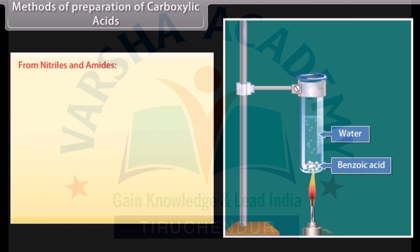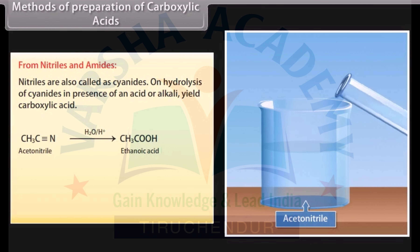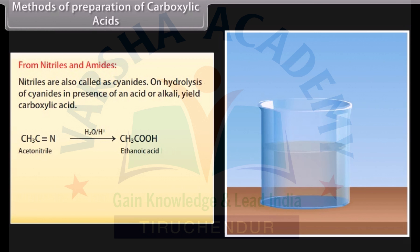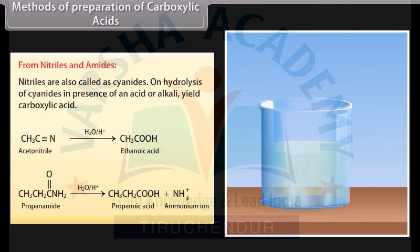From nitriles and amides: nitriles are also called cyanides. On hydrolysis of cyanides in the presence of an acid or alkali, carboxylic acids are yielded. Hydrolysis of acetonitrile in the presence of an acid forms ethanoic acid. On hydrolysis of propanamide in the presence of an acid, it forms propanoic acid and ammonium ion.